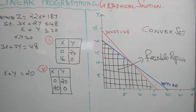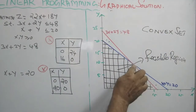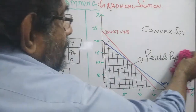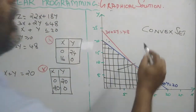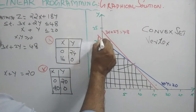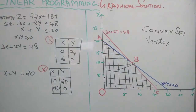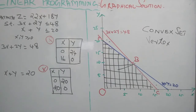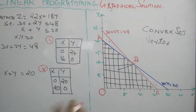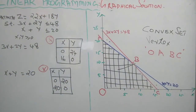The next step is to locate the vertices — that is, the points of intersection of the straight lines on the convex set. We determine the vertices of the feasible region. One point is the origin O. Another point is A. The point of intersection of the two constraints is denoted B, and another corner point is C. So we locate the feasible region and identify the vertices O, A, B, C — these form the boundary of the feasible region, which is a convex set.